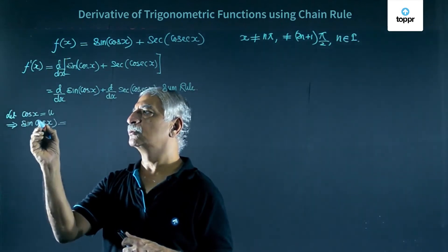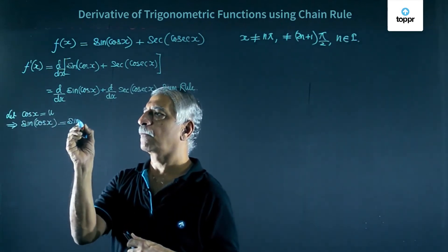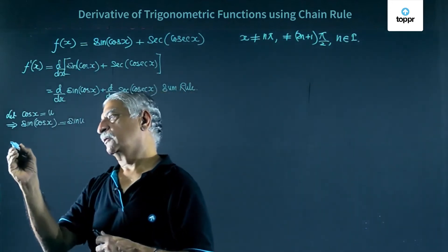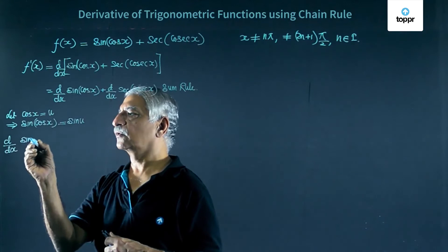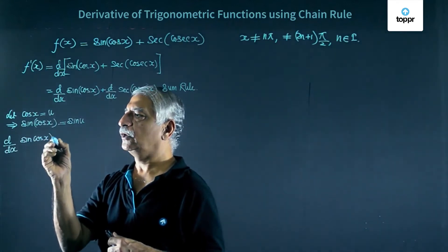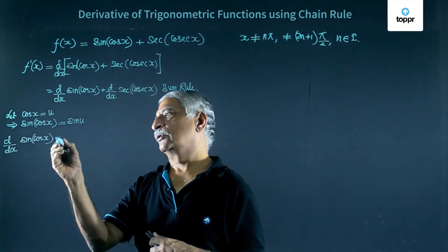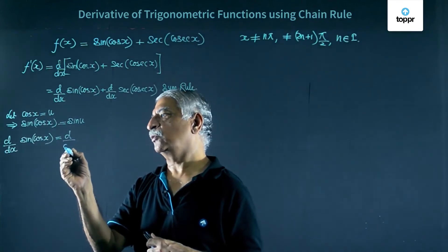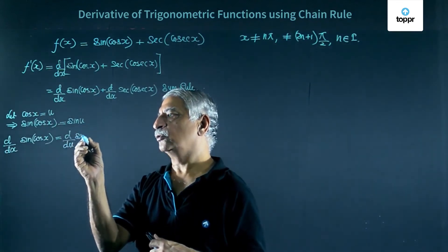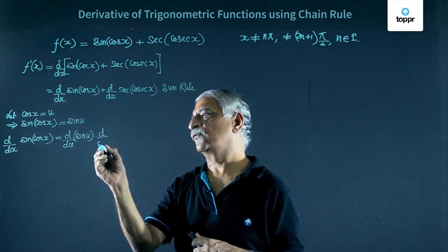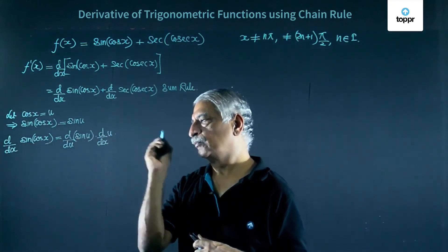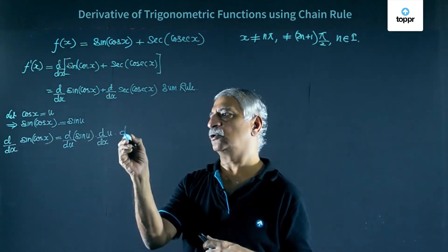Then d by dx of sin of cos x will be equal to d by du of sin u into d by dx of u. This is by chain rule.